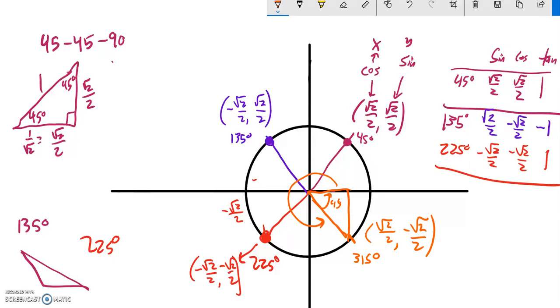And then, similarly, if I just think about my sine, cosine, tangent values, 315, sine's opposite or y, so negative root 2 over 2, cosine's adjacent or x, root 2 over 2. If I go opposite over adjacent for tangent, negative divided by positive is negative.